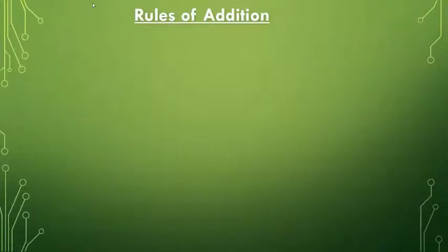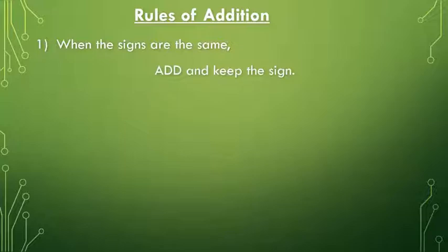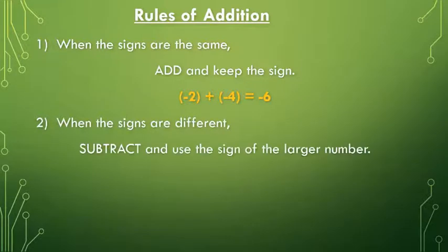We first have to learn the rules of addition before we can add integers. The first rule is that when the signs are the same, we have to add and keep the same sign. For example, minus 2 plus minus 4 is equal to minus 6.